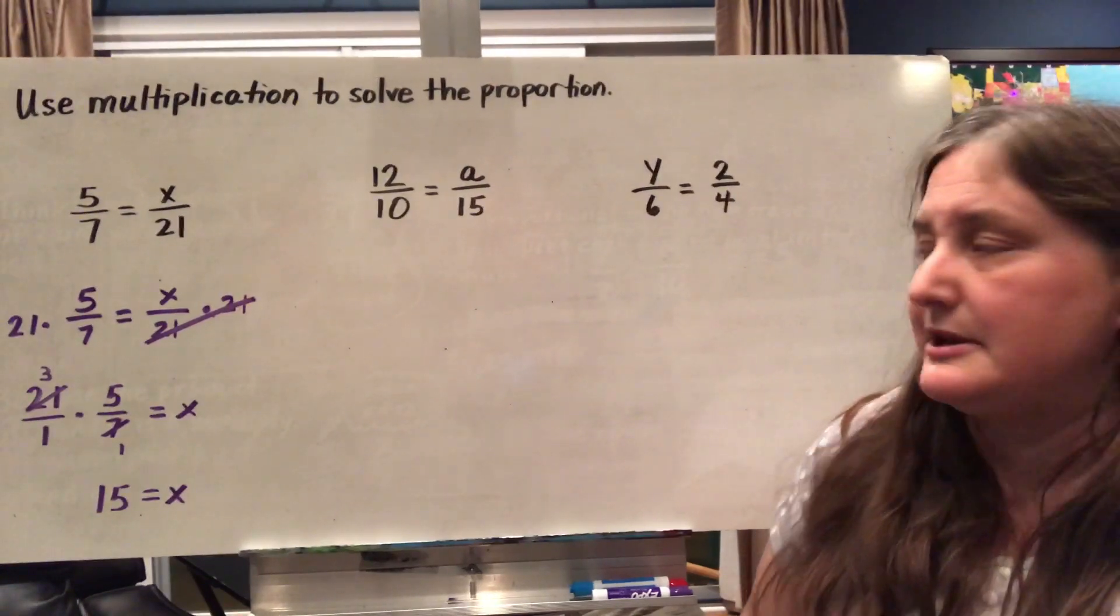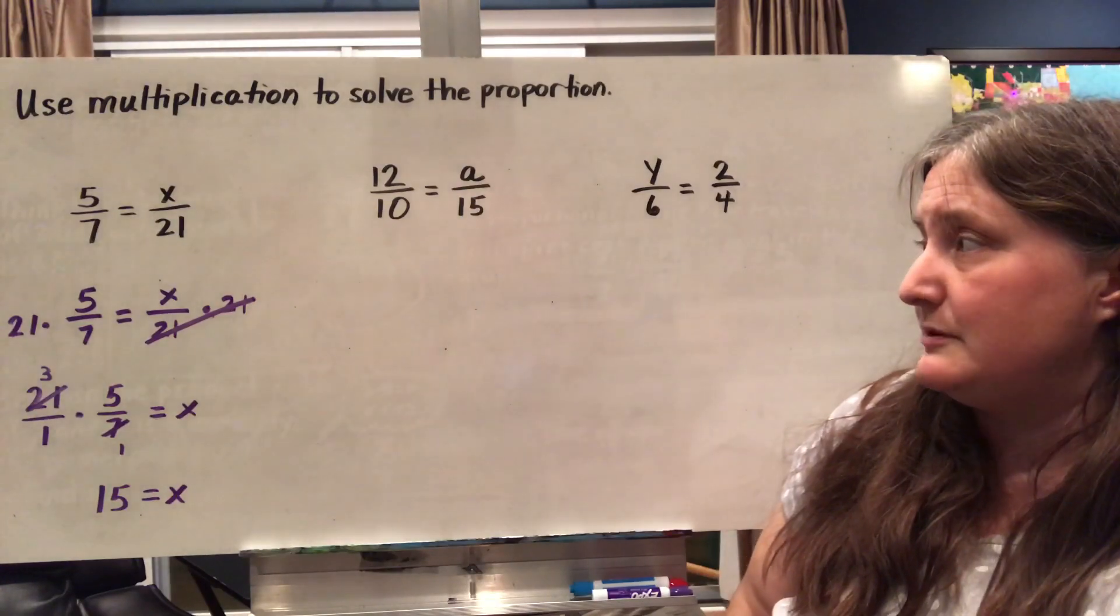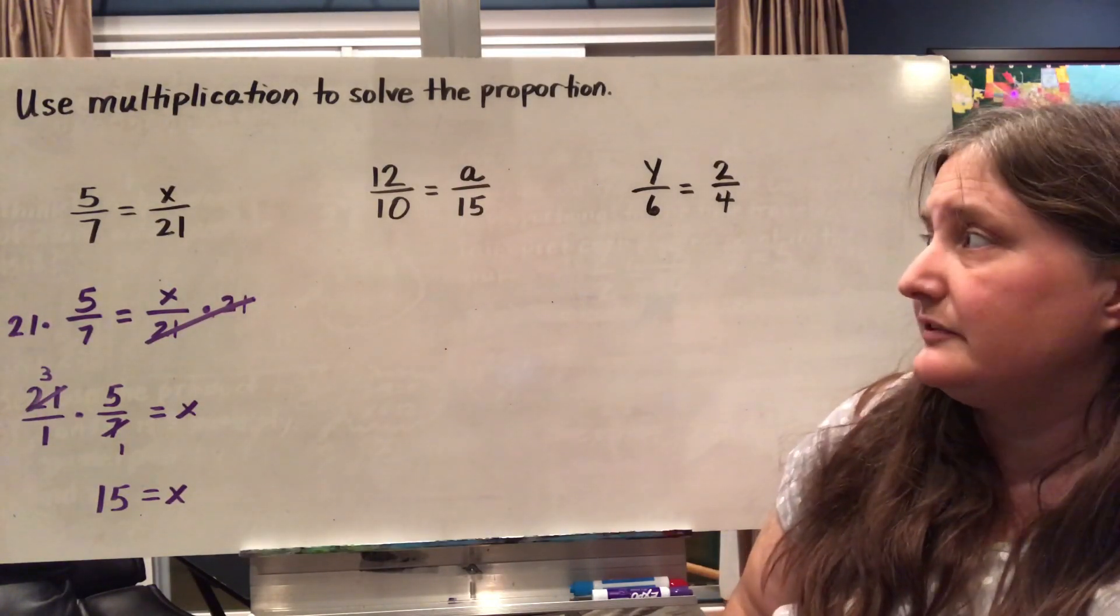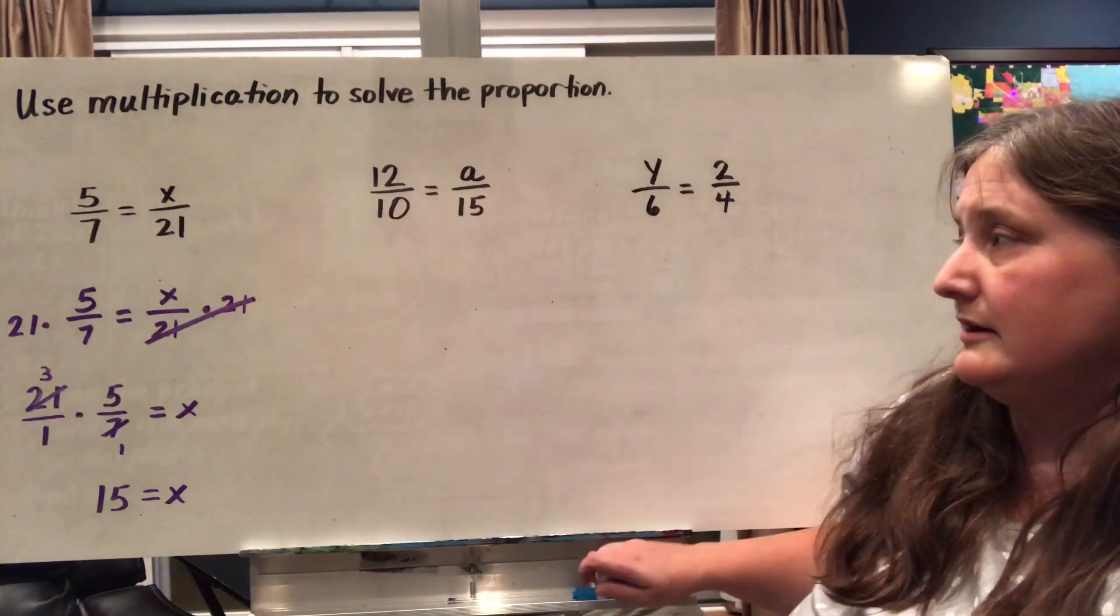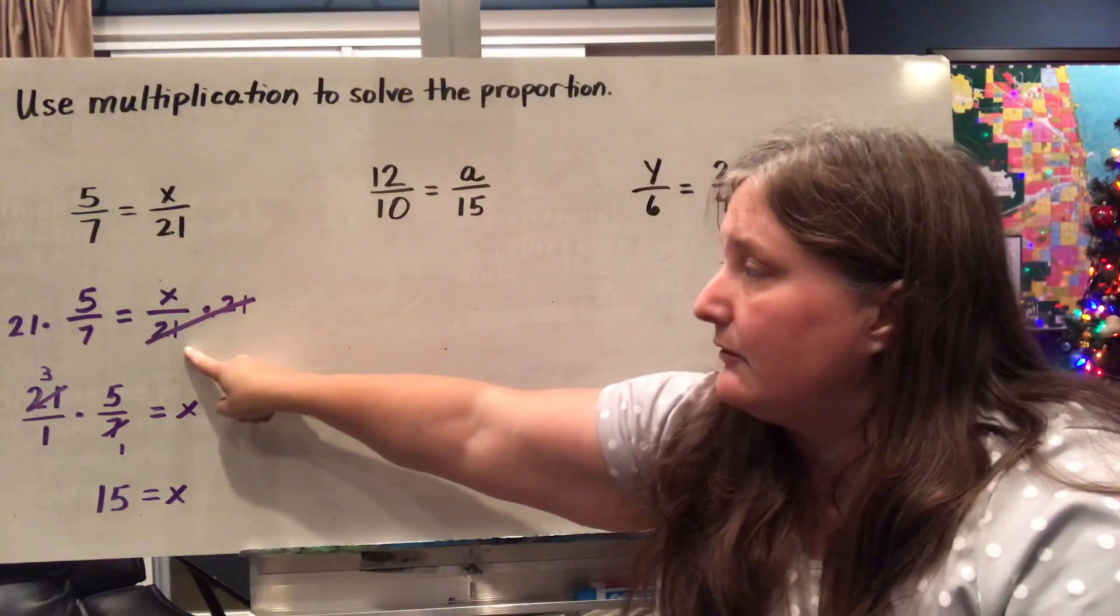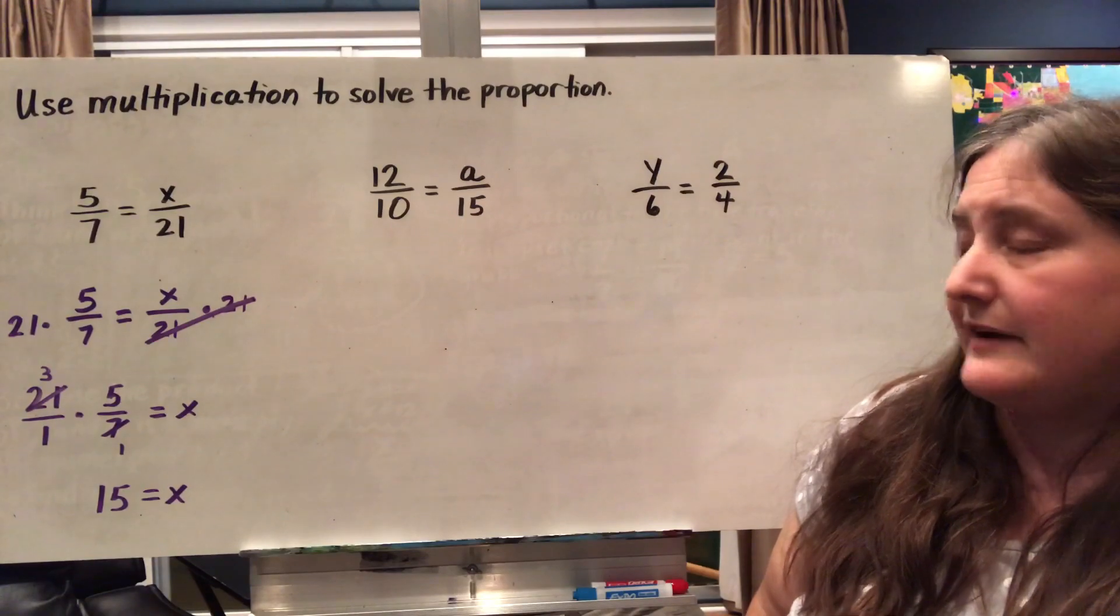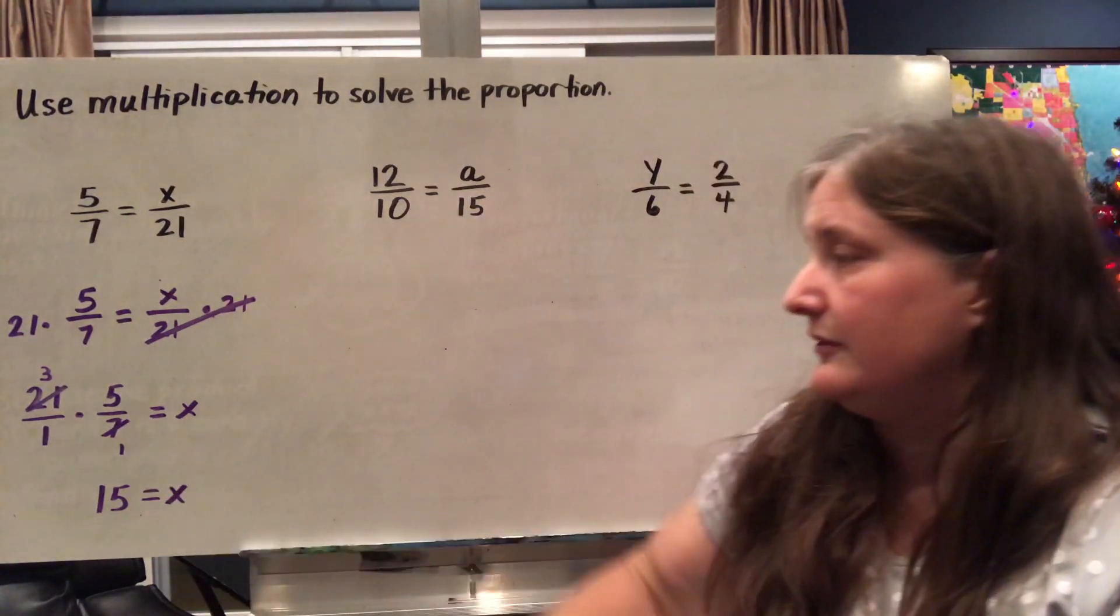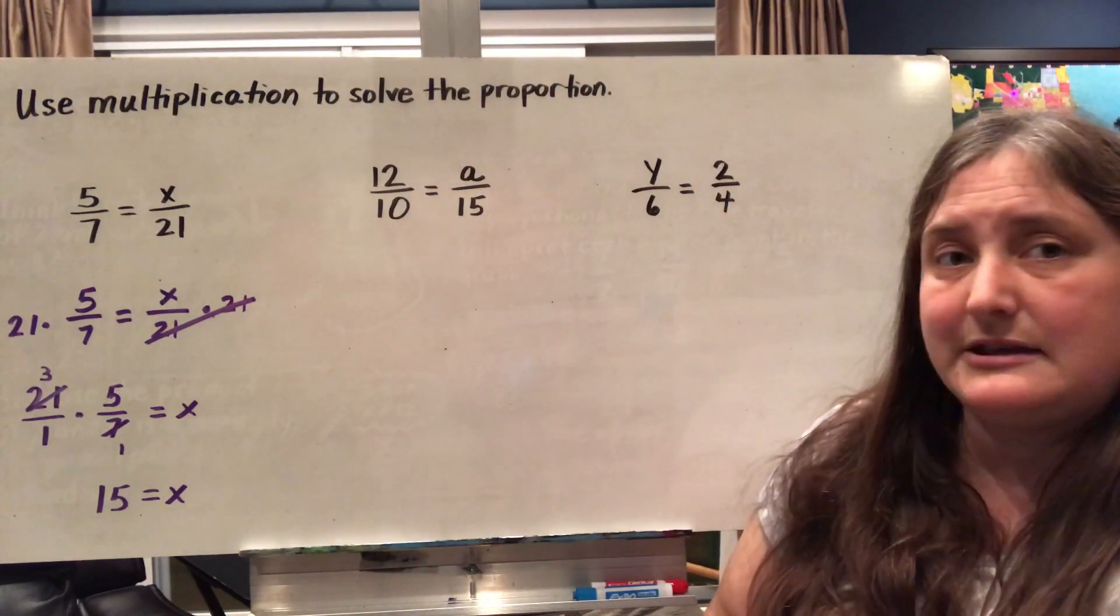So in this first problem here, we had 5/7 equals x over 21. We could also read that as 5 divided by 7 equals x divided by 21. So to get rid of the 21, I'm going to multiply each side by 21 and here it cancels out. On this side, when I multiply 21 by 5/7, or 21 over 1 times 5/7, I can do some cross reducing and I get x equals 15.